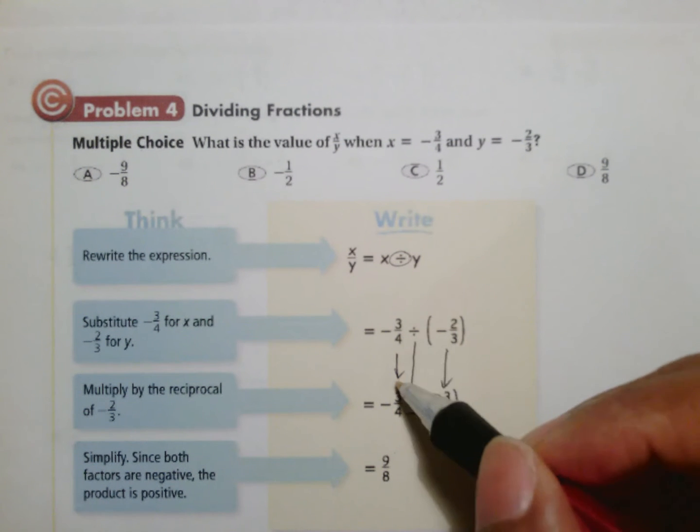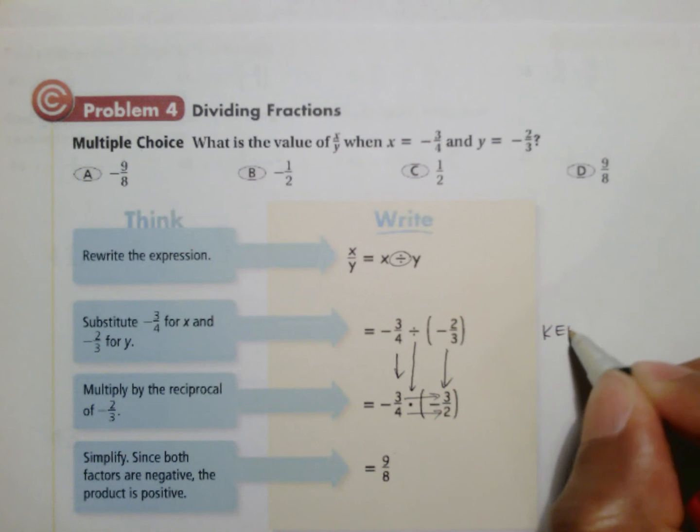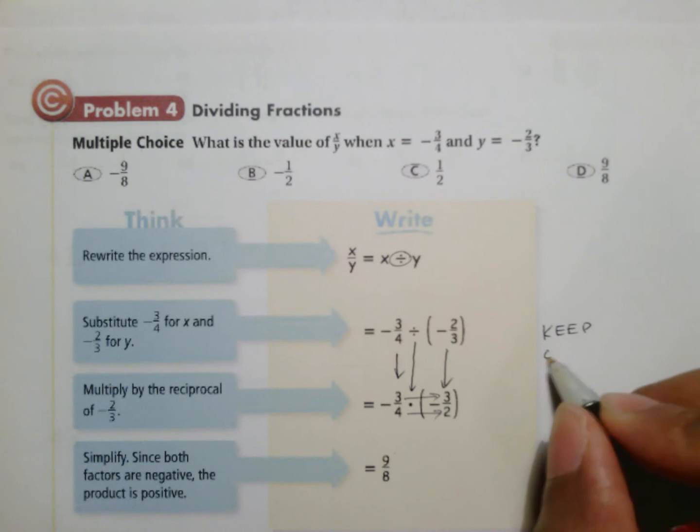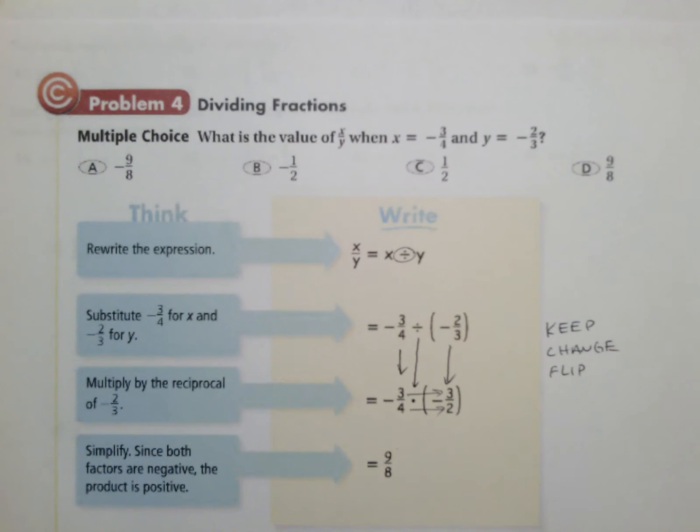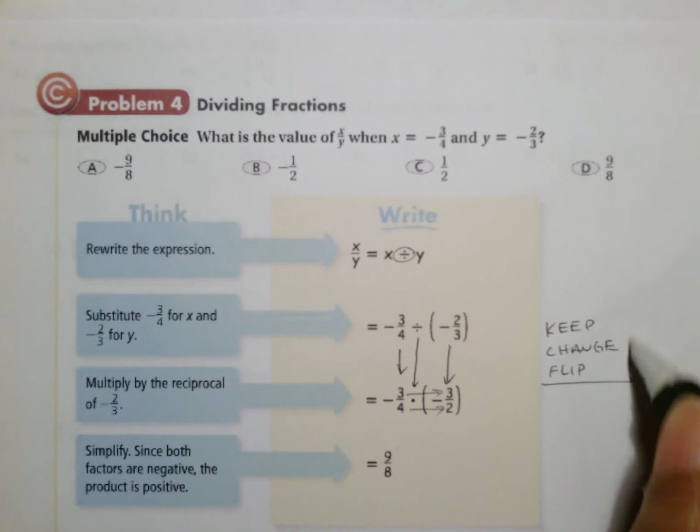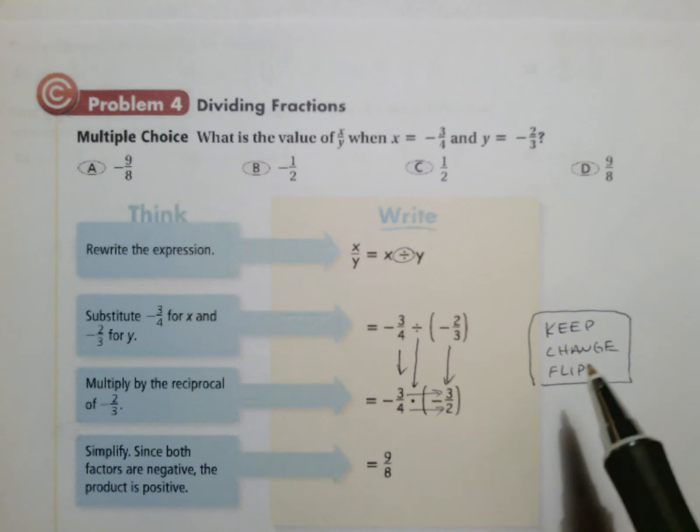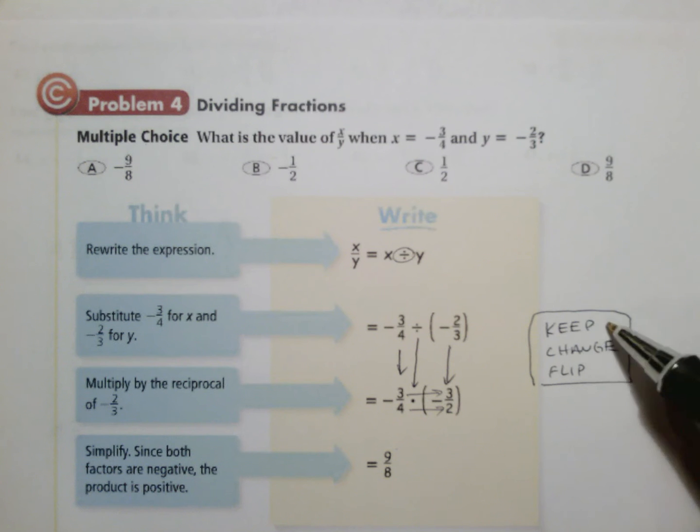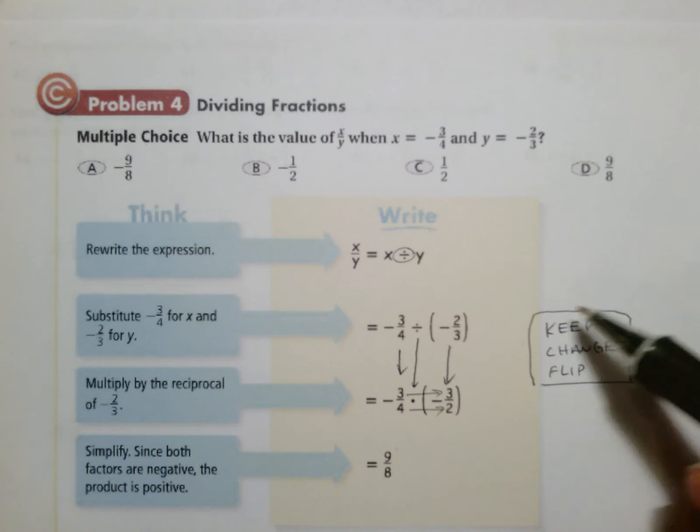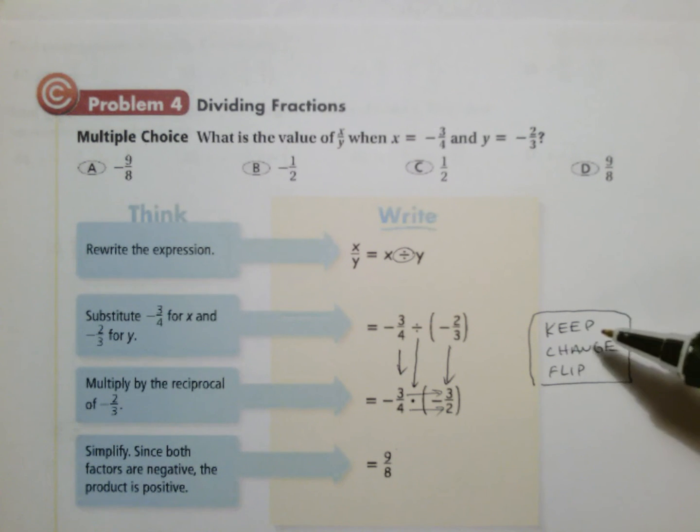And 2 negatives makes that positive. So to me, it looks as if they kept the first one the same, they changed the sign into multiplication, and they flipped the fraction in order to do what they needed to do. So this is a phrase that I typically teach my students, but a lot of teachers typically teach their students whenever it comes down to dividing: Keep, change, flip. It's a phrase that you can put in your notes. Make sure you got this because what it's telling you to do is keep the first fraction the same, change the division into multiplication because we really don't know how to divide fractions, and then flip the second fraction so that your multiplication is official.